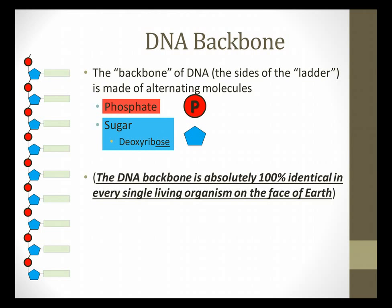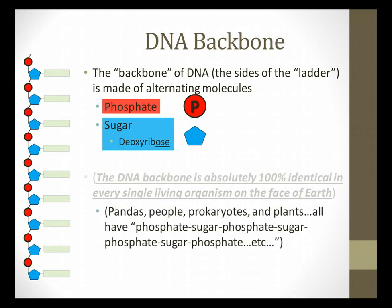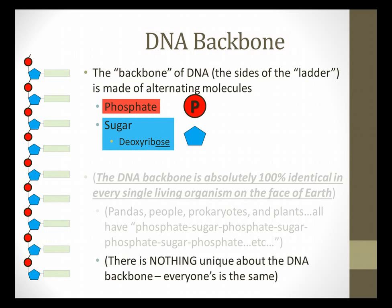Now that backbone of DNA is absolutely 100% identical in every single living organism on the face of the planet. If you attend pandas, people, prokaryotes, and plants, every single one of them is going to have identical DNA backbones. Phosphate, sugar, phosphate, sugar, etc. They're all going to be the same. There's no differences, no changes there. There's nothing unique about that. When they're looking at your DNA, trying to figure out if you are the father or mother, they're not looking at the outside there, because that's literally to the molecule, to the atom, identical on every organism on the planet. The DNA backbone just holds it in there.